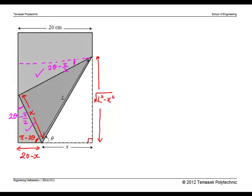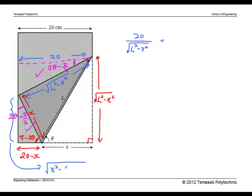By equating the ratios of the corresponding sides, we can find that 20 over square root L squared minus x squared, since it is folded from this triangle, is equal to this side, which is x squared minus 20 minus x squared, by Pythagoras theorem, over x.